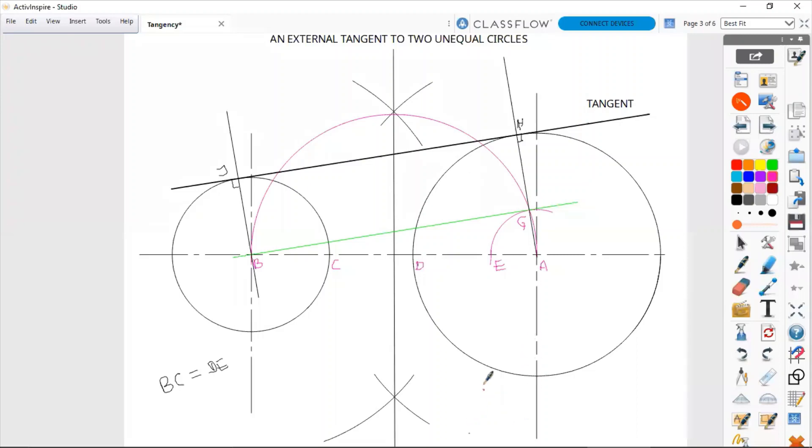In the case of an external tangent, the first tangent goes through point B and touches this small circle here, which has a radius such that...